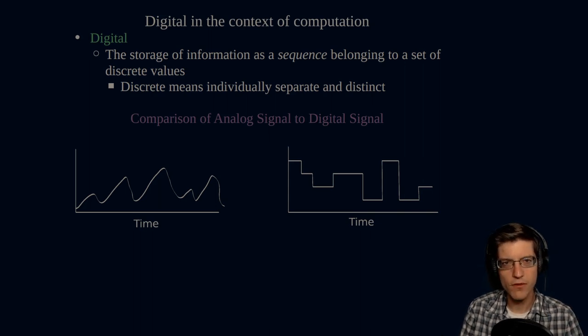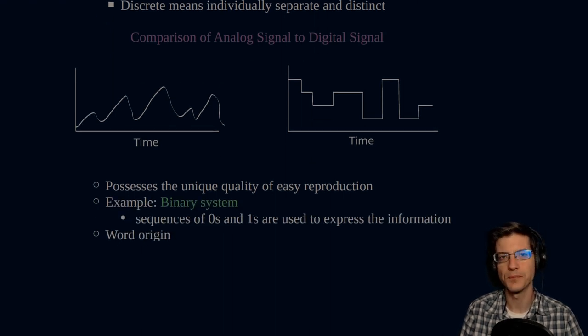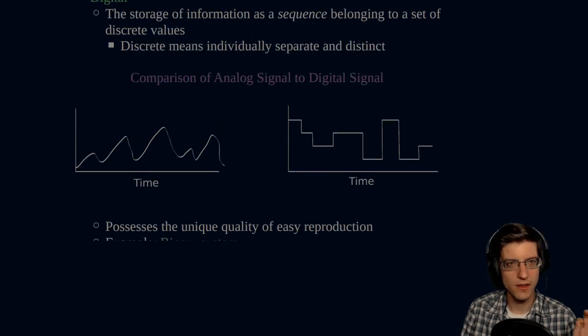It's the storage of information as a sequence belonging to a set of discrete values. So sequence, this means that this bit of information has some importance. The order of the bits, the order of the values has importance. That's what a sequence is. What does discrete mean? Discrete means individually separate and distinct. This means that no two values can be the exact same thing.